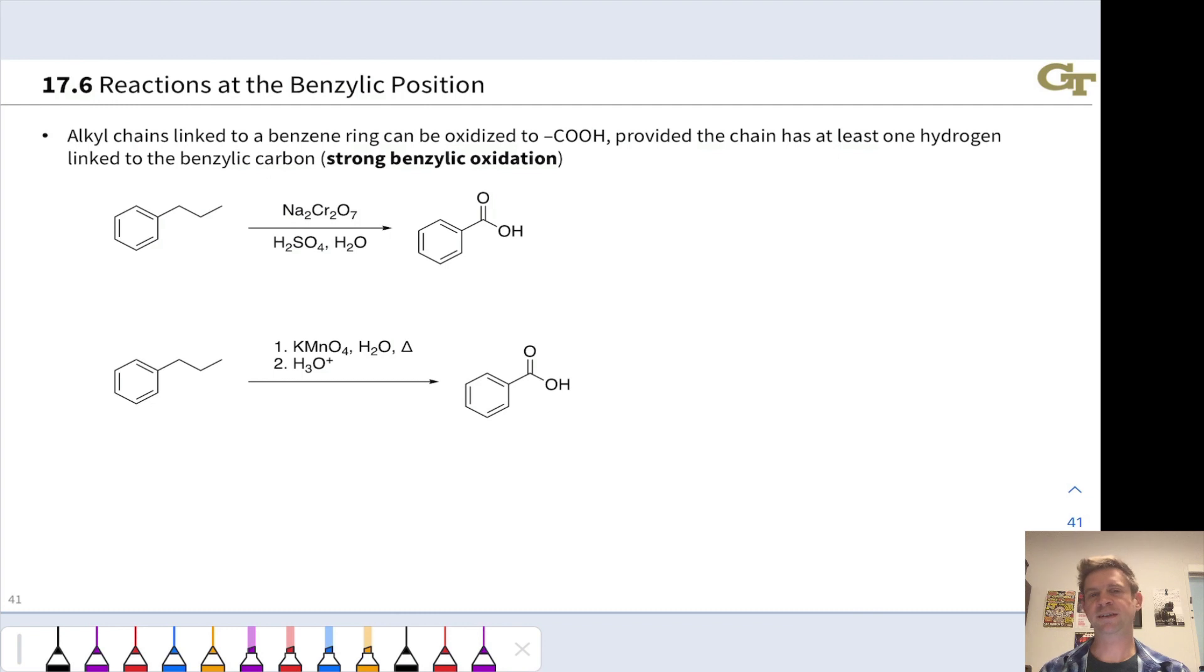One specific type of reaction that we're going to look at here that's going to be useful for us later at benzylic positions is the oxidation of an alkyl chain linked to a benzene ring down to a benzylic acid. And this can be done two different ways, using sodium dichromate and an acid, H2SO4.